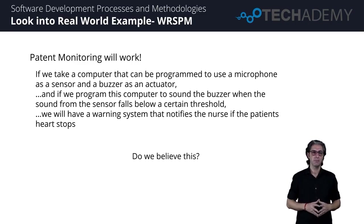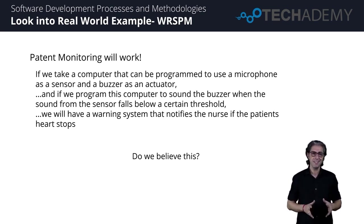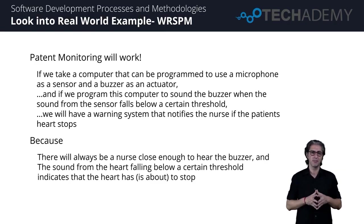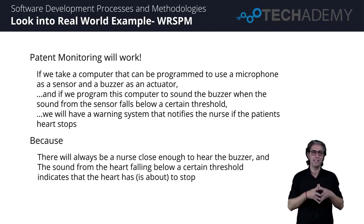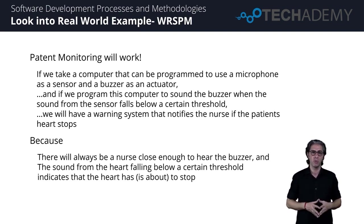But we're still missing some key elements — these are the W from the WRSPM model, the world assumptions. We assume there will always be a nurse close enough to hear the buzzer — but nothing is said about the nurse actually hearing the buzzer. That's a world assumption. We make a business rule assumption that a nurse will be stationed at the nurse's station since that's where the buzzer is located. So if it buzzes and there's a nurse available there as the business rules require, the buzzer has to be heard by them.